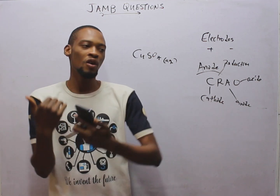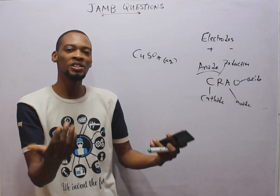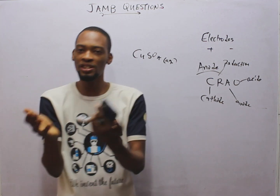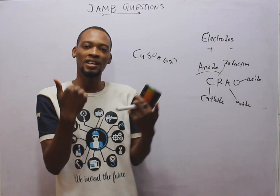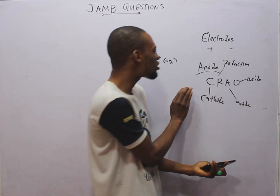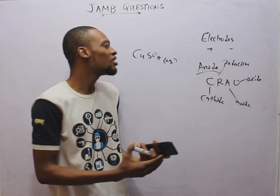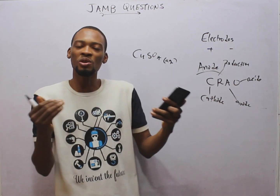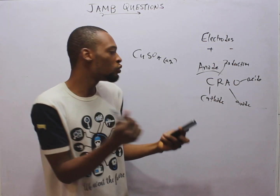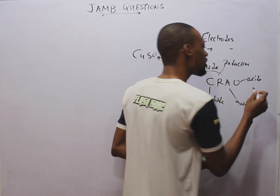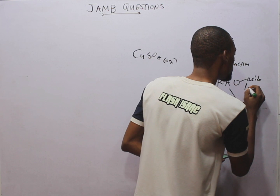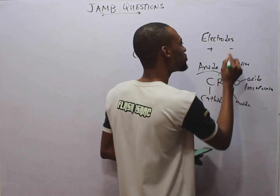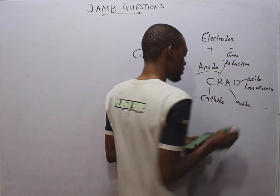What is oxidation? Oxidation is the addition of oxygen, or the removal of hydrogen. Reduction is the removal of oxygen, or the addition of hydrogen. In electrolysis, the main concern is loss or gain of electrons. Oxidation means loss of electrons, and reduction means gain of electrons.